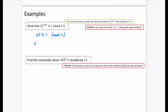Now underneath this, we can put both sides to the power of 753, and we know that would be true. So therefore it is congruent to 1 to the power of 753. And 1 to the power of 753 is just 1. So I can write: hence, 23 to the power of 753 is congruent to 1 mod 11.